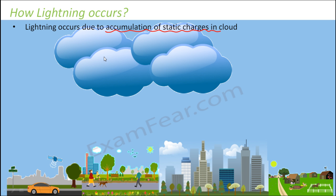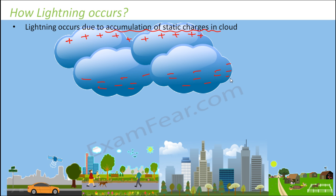Over a period of time, the entire cloud is filled up with electric charges, segregated in such a way that the top layers of the cloud have all the positive charges and the bottom layers have all the negative charges. Since the bottom portion of the cloud is negatively charged, anything on the ground tends to have positive charges on its upper side, because similar charges repel and electrons move away.